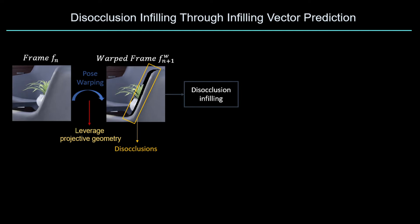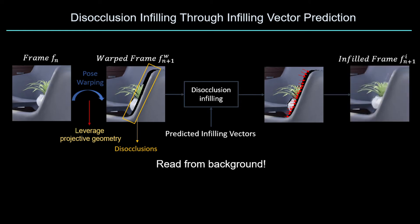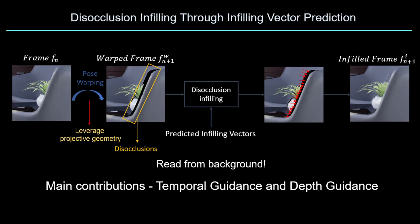Instead of directly synthesizing RGB intensities which can cause blur, our idea is to read off from the known neighborhood around a disocclusion, particularly the relative background. We predict infilling vectors for every disoccluded pixel in warp frame n plus one to point from a known region in the same warp frame to a disoccluded pixel to infill the intensities.